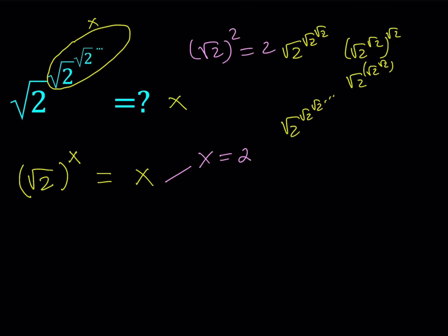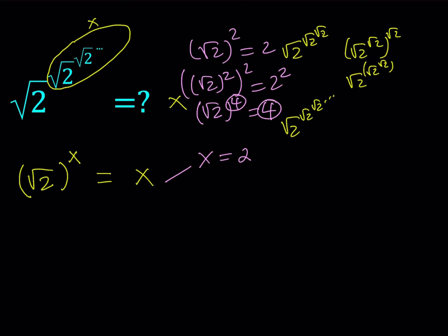But is 2 the only number that works? This is where the ambiguity starts. 4 also works. If you square both sides of the equation square root of 2 to the x equals x, you get square root of 2 to the fourth power equals 4 — which is true. So both the exponent and the result give the same number. That means x equals 4 is also a candidate solution, and we have to clear up this ambiguity.